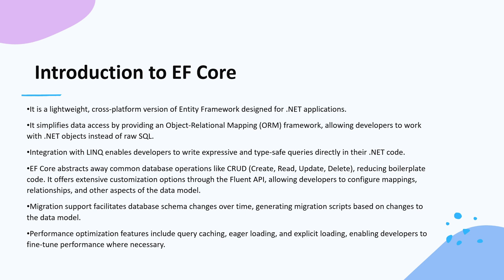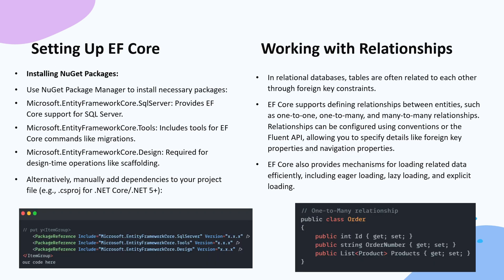EF Core offers extensive customization options through the Fluent API, allowing developers to configure mappings, relationships, and other aspects of the data model. It supports migrations — EF Core migration support facilitates database schema changes over time by generating migration scripts based on changes to the data model. Performance optimization features include query caching, eager loading, and explicit loading, enabling developers to fine-tune performance where necessary.